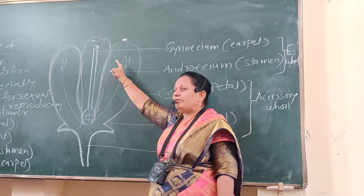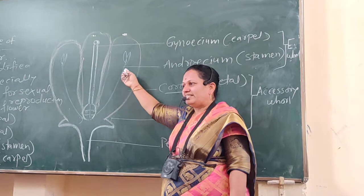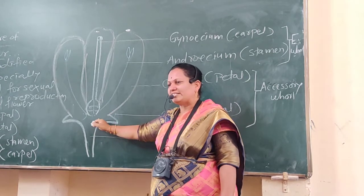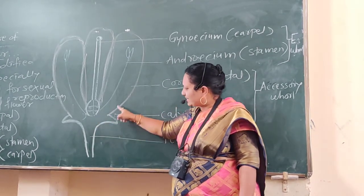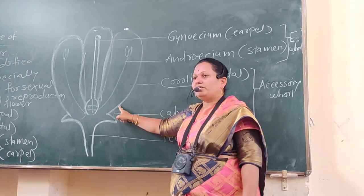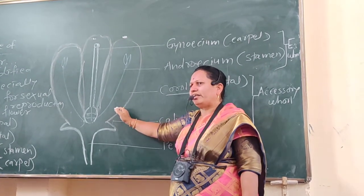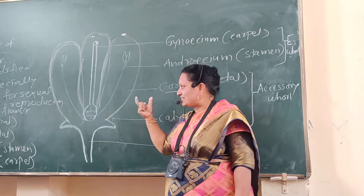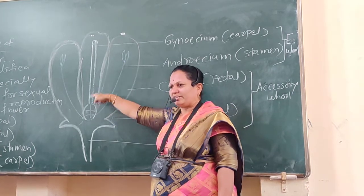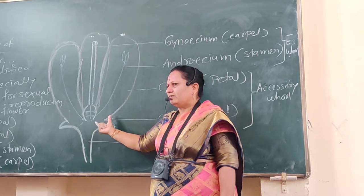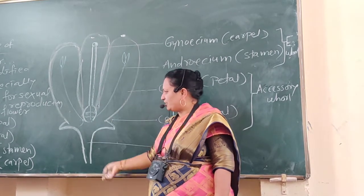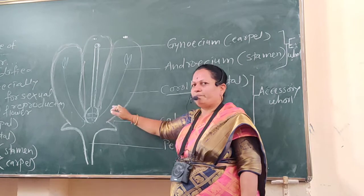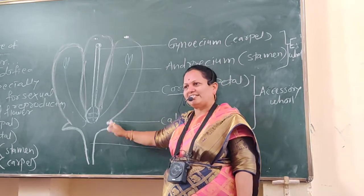When pollination takes place by insects, insects are attracted by the bright colored flower or by the presence of nectar inside the flower. Calyx and corolla are helpful for the main aim of the flower, which is production of fruit. After pollination, fertilization takes place, and then fruit is produced. The main function of the flower is production of fruit, aided by the two accessory whorls, calyx and corolla.